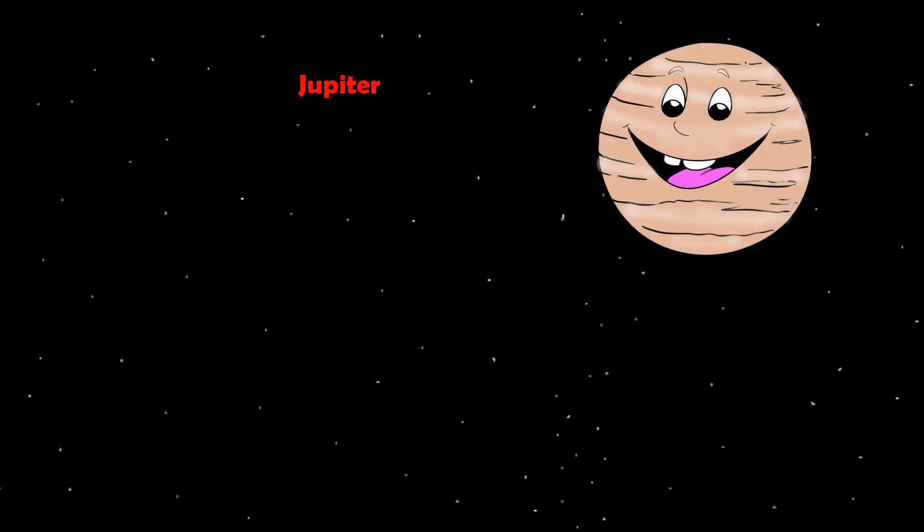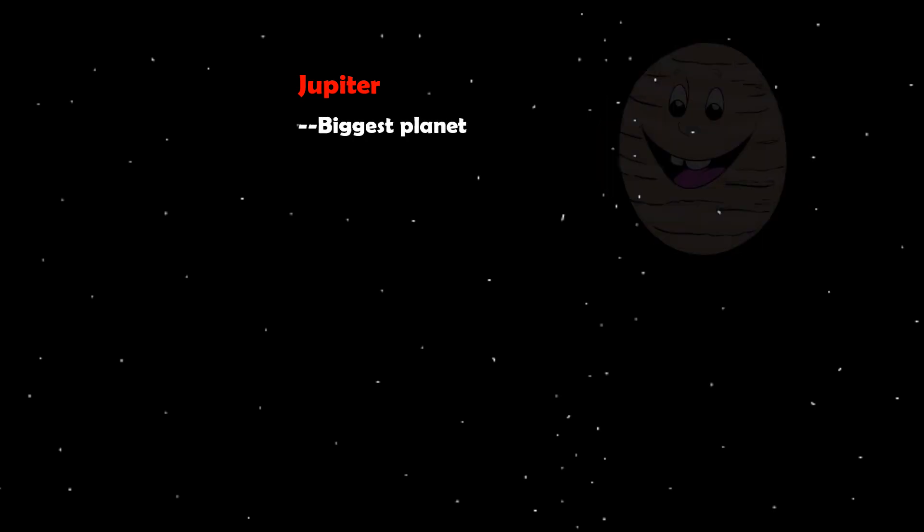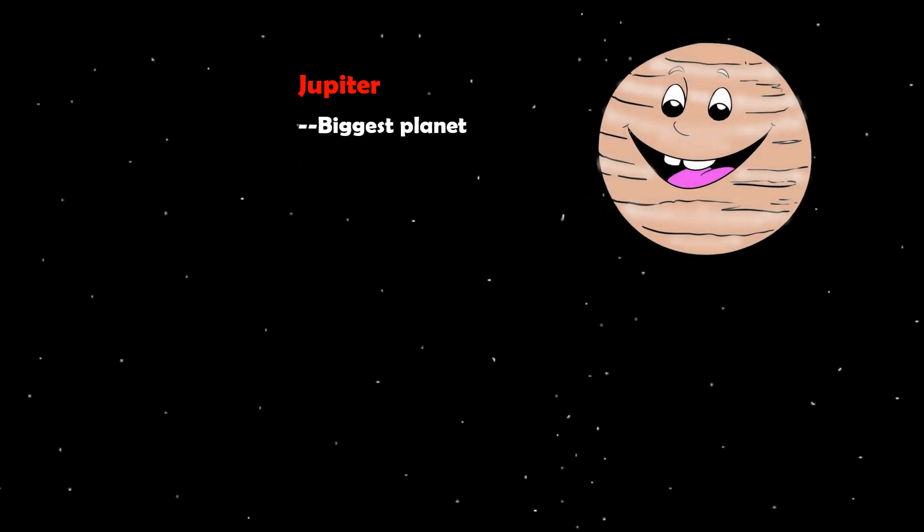Jupiter is the fifth planet from the Sun. It is the biggest planet of our solar system. It is a gas giant. It has 79 moons.